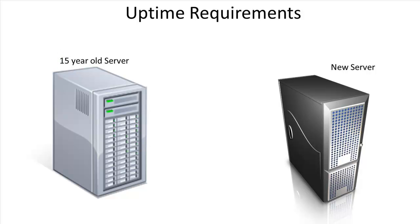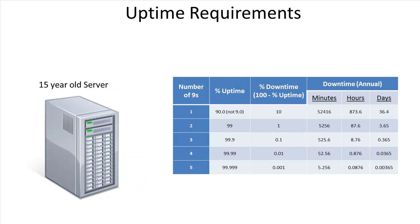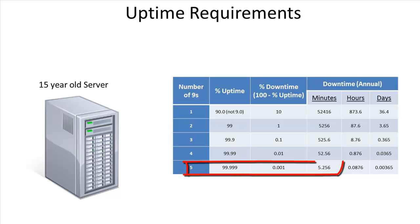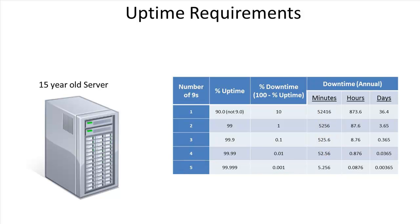Since no single server can be up 100% of every minute for years or decades, we talk about server uptime in the number of nines. Five nines means the server needs to be up 99.999% of the time. Looking at this chart, to achieve five nines you can be down for just over five minutes per year. Availability is most commonly calculated as a ratio of actual uptime to expected uptime, and this grid shows how much downtime you're allowed to achieve each level of nines.